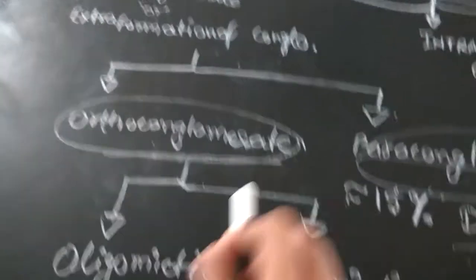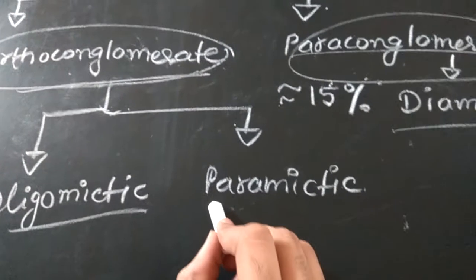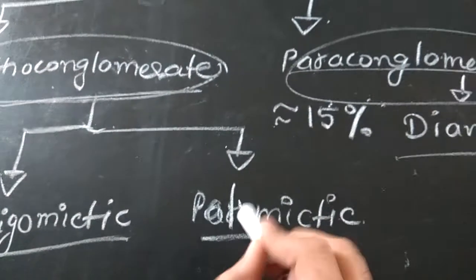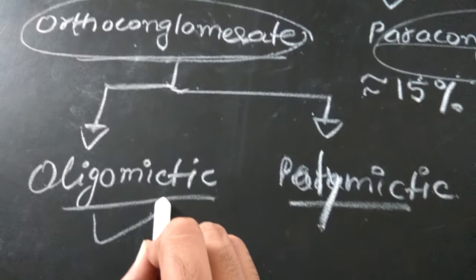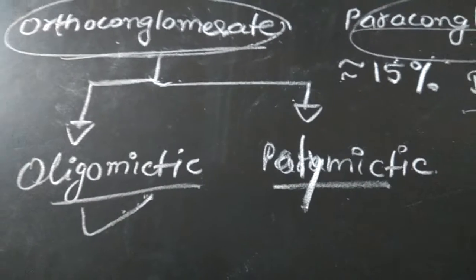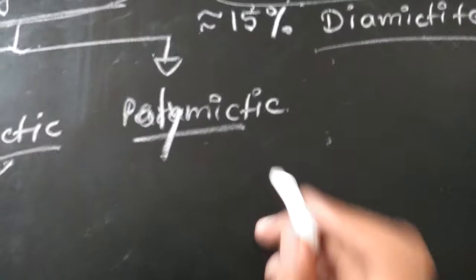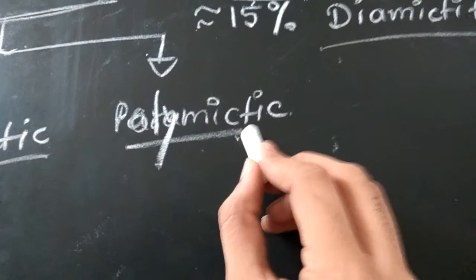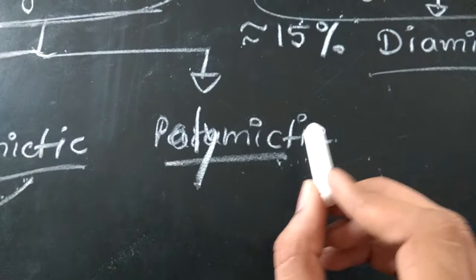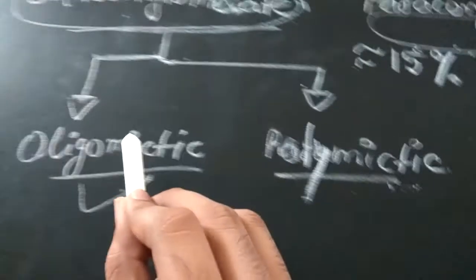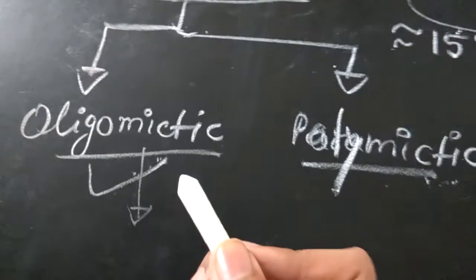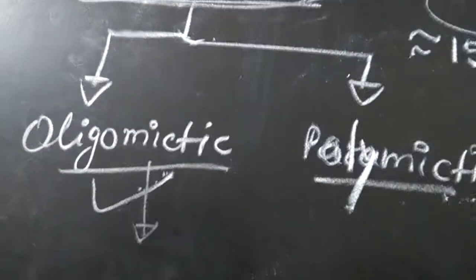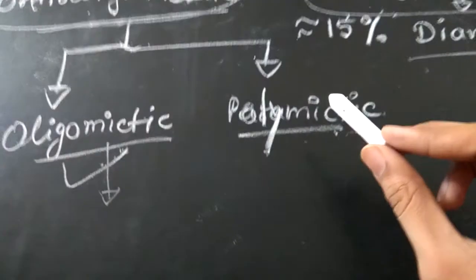Orthoconglomerate is further divided into oligomict conglomerate and polymict conglomerate. Oligomict conglomerate is famous for marking basal Cambrian successions, and all its clasts are of the same composition, derived from the same rock with similar chemical composition. In polymict conglomerate, the clasts have different chemical compositions, derived from different source rocks.